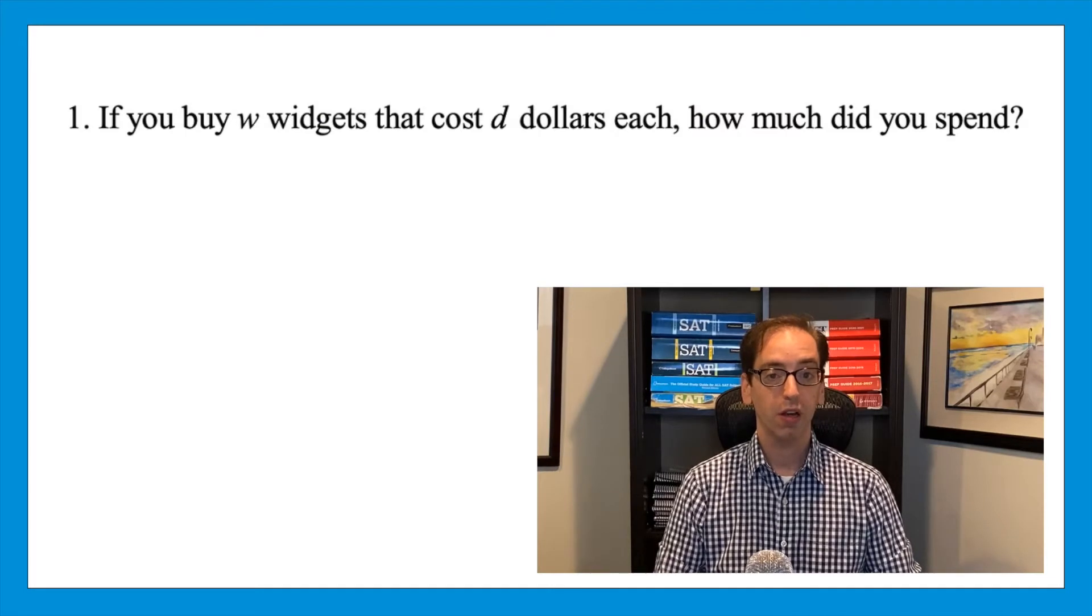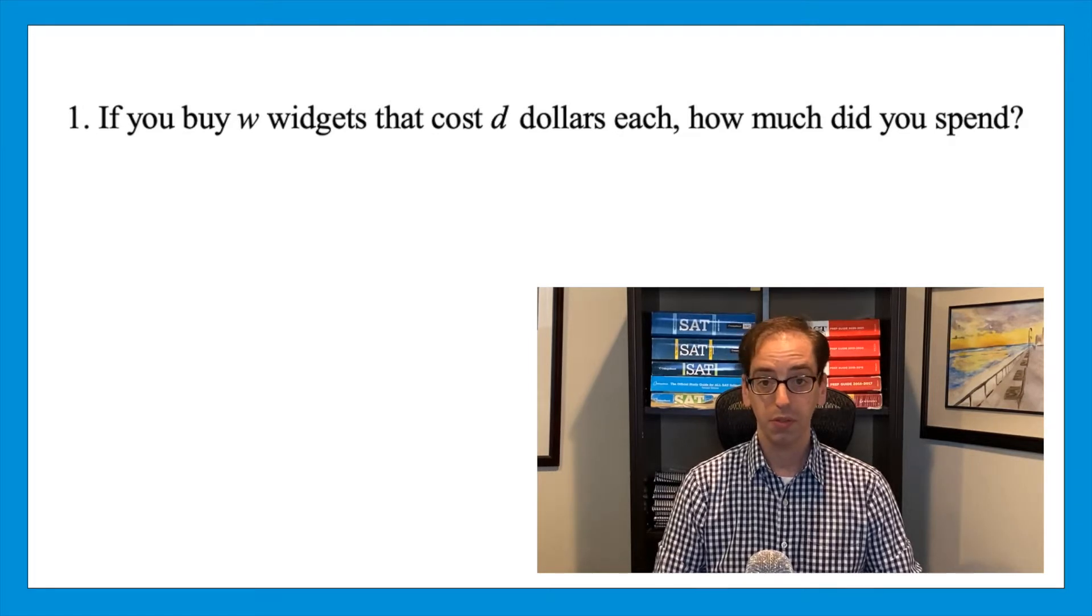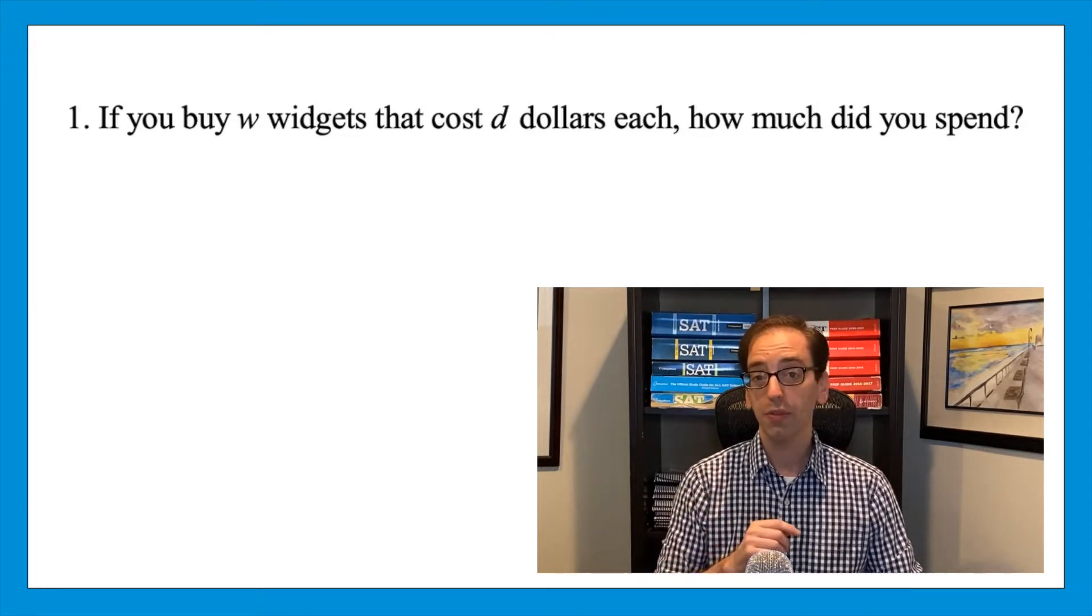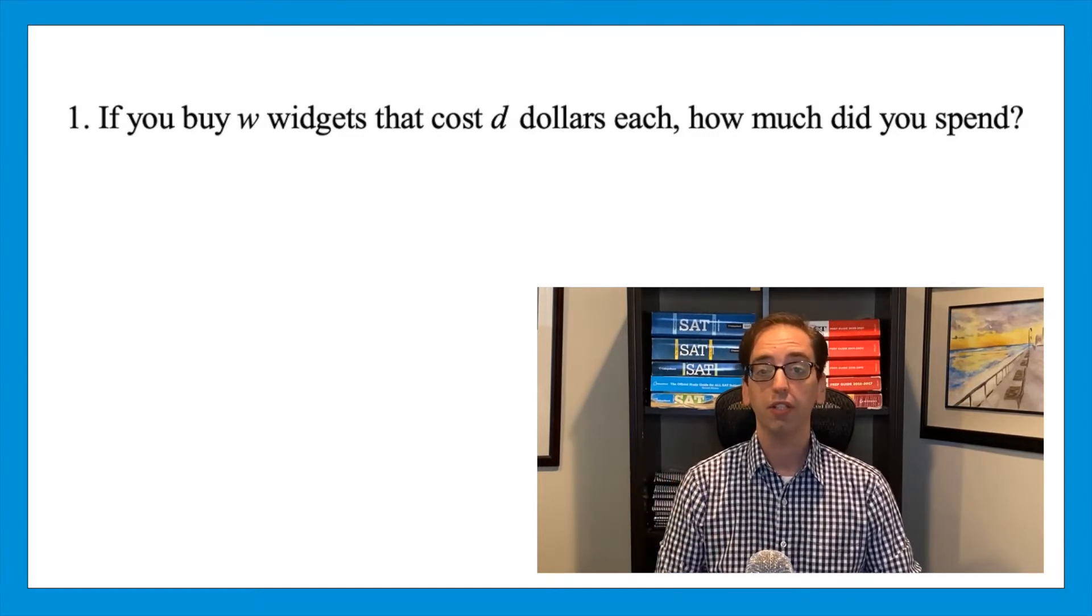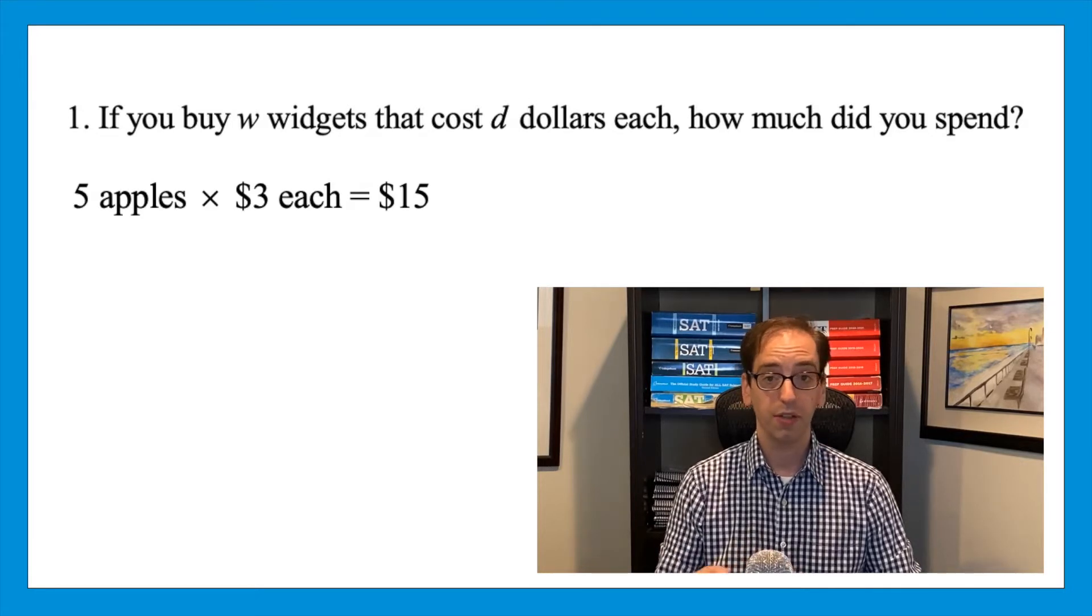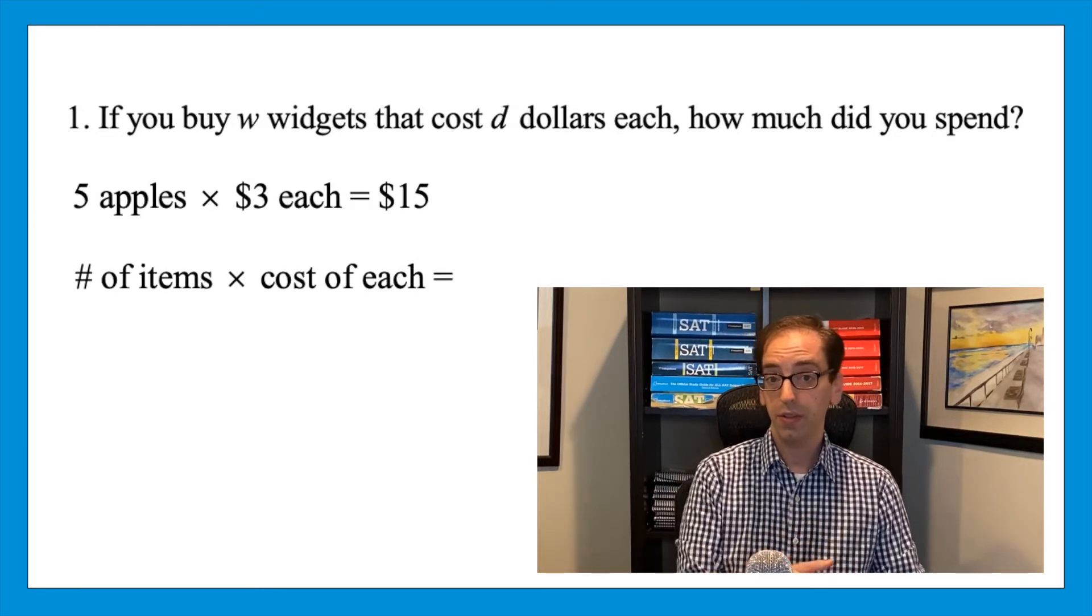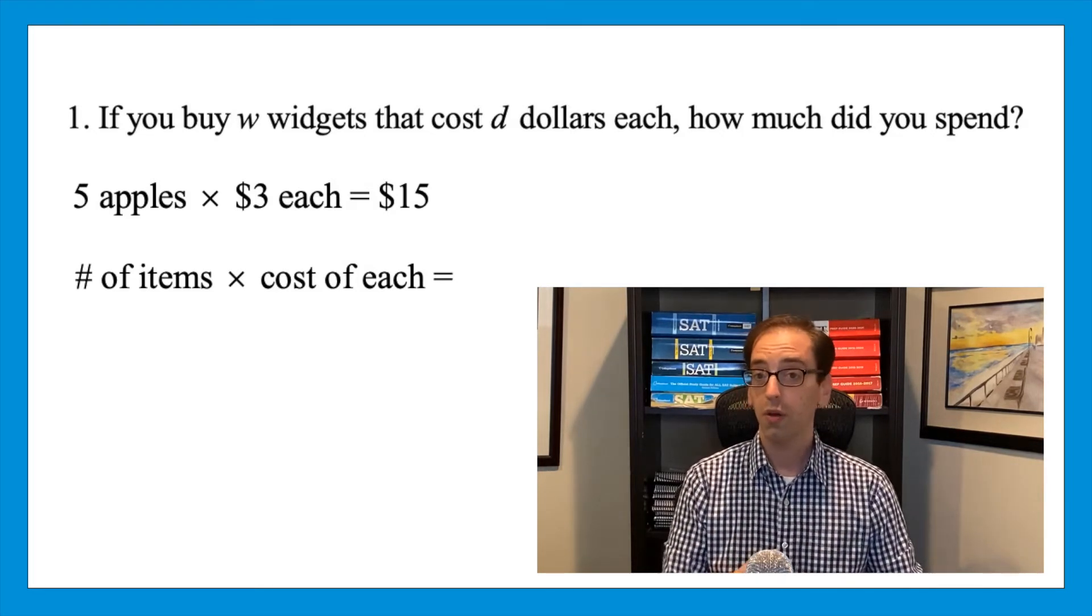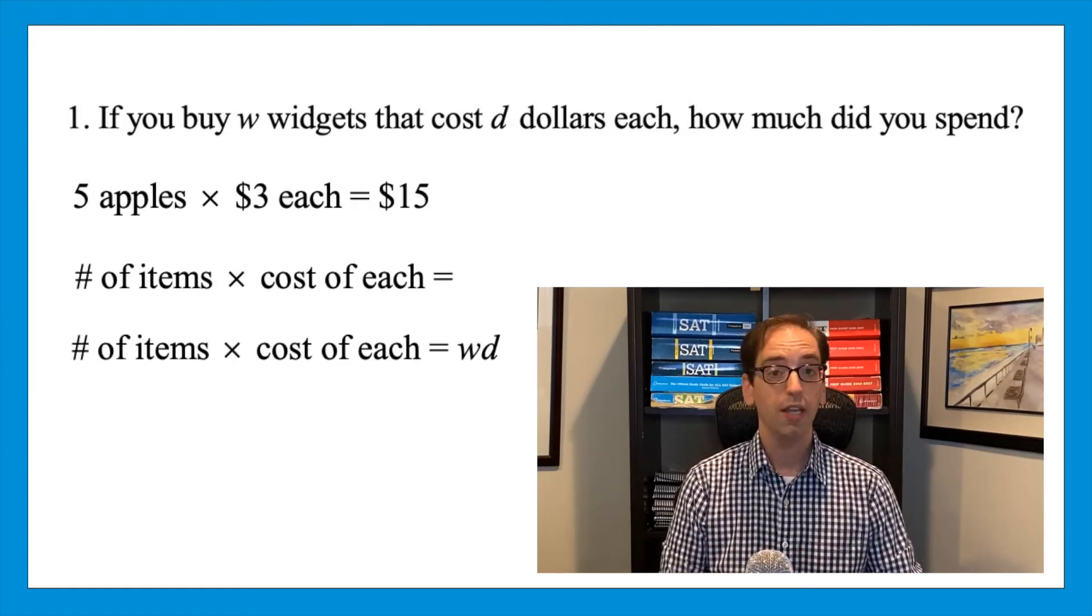Question one. If you buy w widgets that cost d dollars each, how much did you spend? This might be confusing with variables instead of numbers. So let's think of numbers for a moment just to make the concept a little less abstract. Picking nice round numbers, let's say you have five apples and each one is three dollars. How would you get the total cost that you spent? That would be five apples times three dollars each, or fifteen dollars. We took the number of items and multiplied it by the cost of each. Same thing's going on here with the widgets. So if you have w widgets that are d dollars each, it means you spent wd. This question might not be so bad, but it illustrates the principle nicely. If you get stuck with variables, pretend that they're numbers.